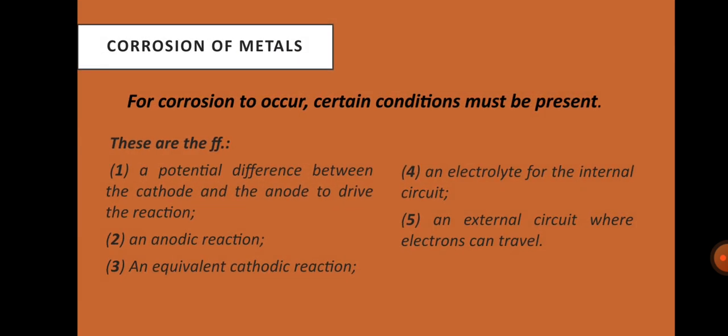For corrosion to occur, certain conditions must be present. There are five: first, a potential difference between the cathode and the anode to drive the reaction; two, an anodic reaction; three, an equivalent cathodic reaction; four, an electrolyte for the internal circuit; and last, an external circuit where electrons can travel.